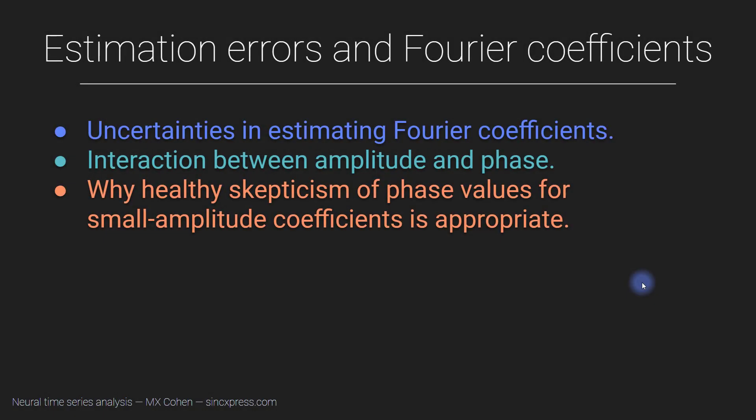It may seem strange that this video is called Estimation Errors and Fourier Coefficients after I spent so much time over several videos trying to convince you that the Fourier transform is perfect and lossless. So how can we call these estimation errors? What's actually happening is that the Fourier transform itself is perfect, but the signals you're measuring and the equipment you're using to measure those signals, those are not perfect. There are estimation errors.